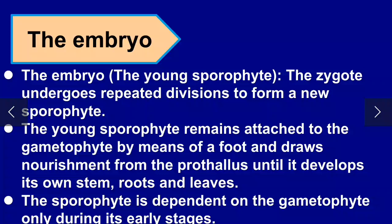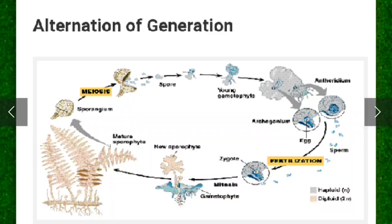After the formation of the zygote, a structure is developed which is called the embryo. The embryo has the ability to form the young sporophyte.